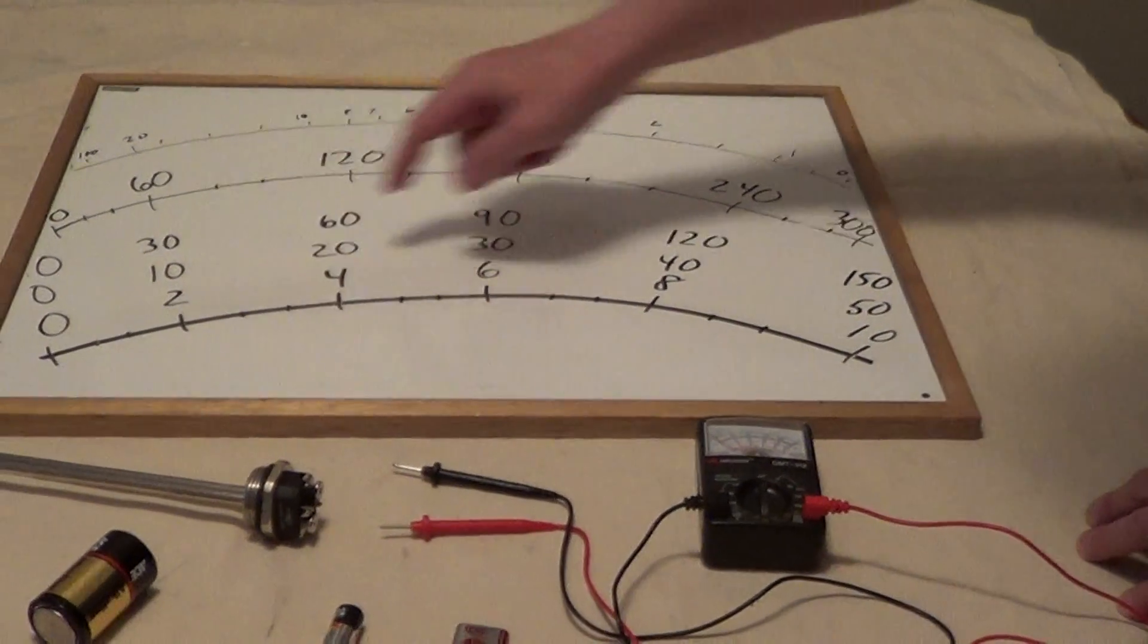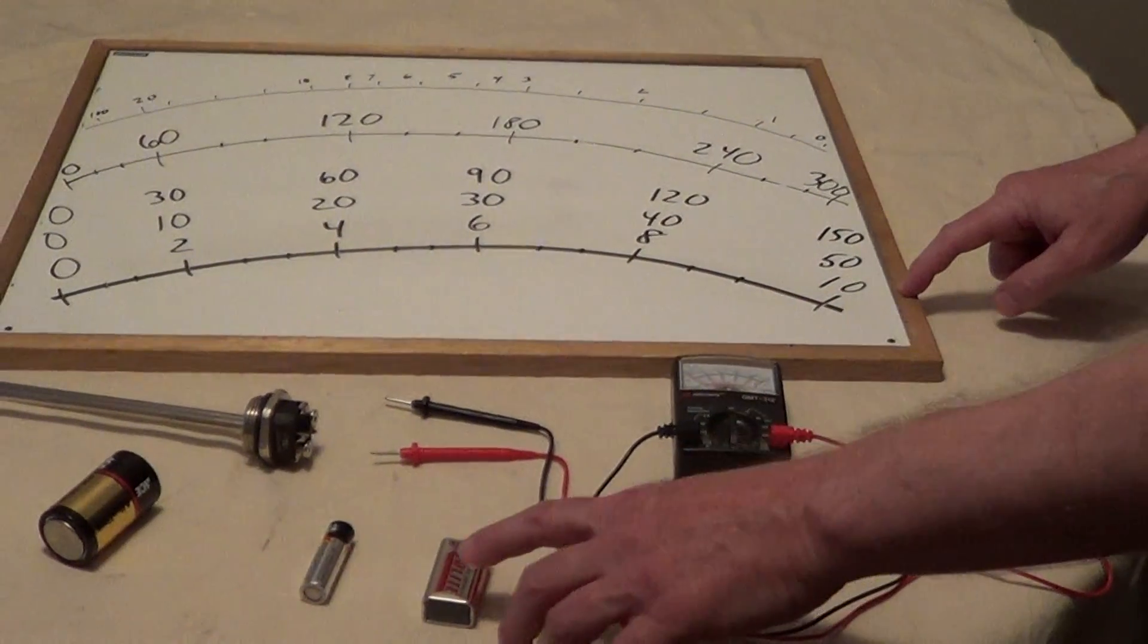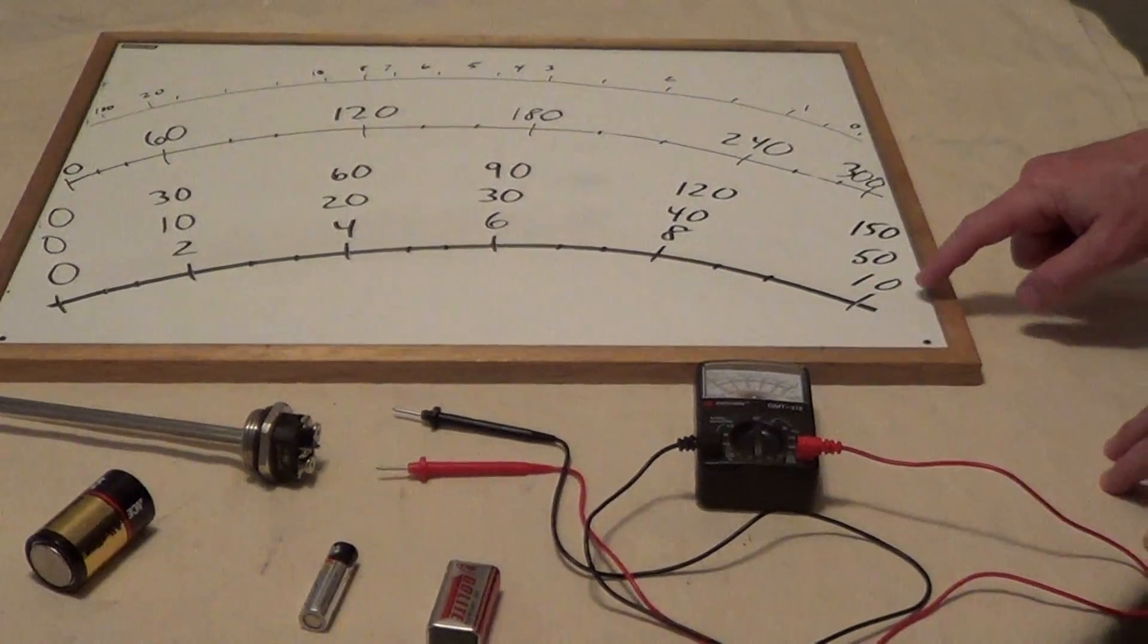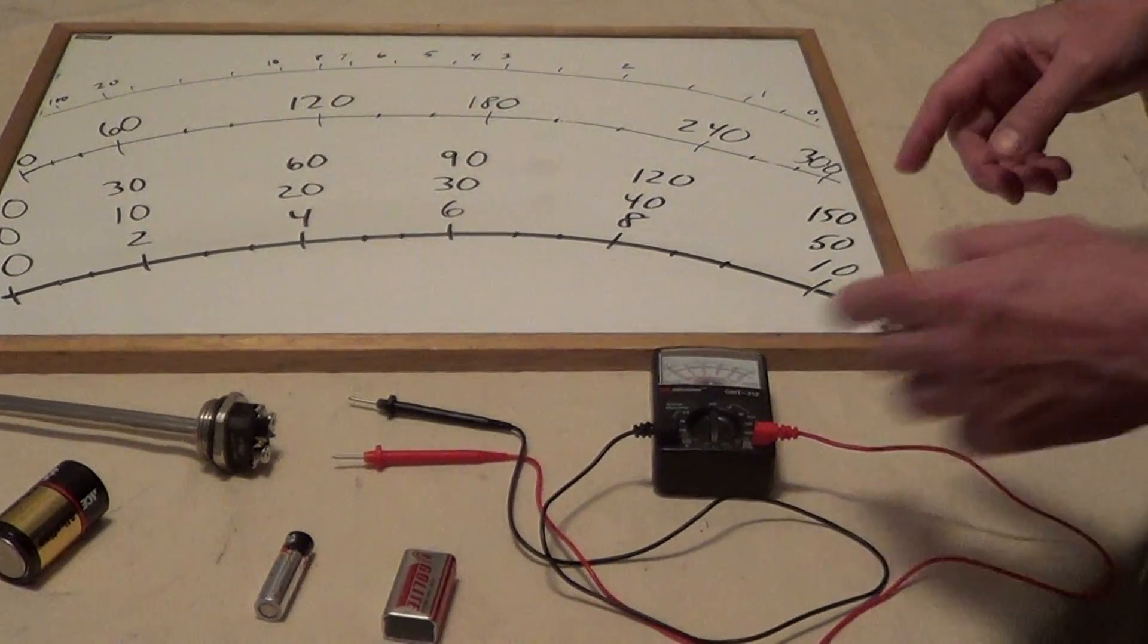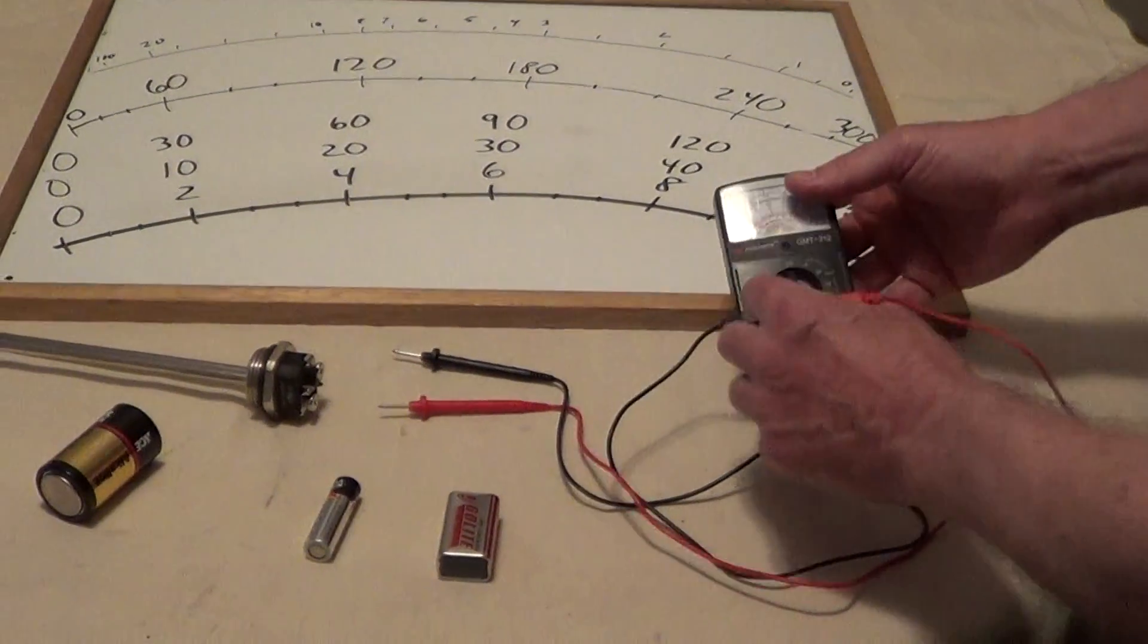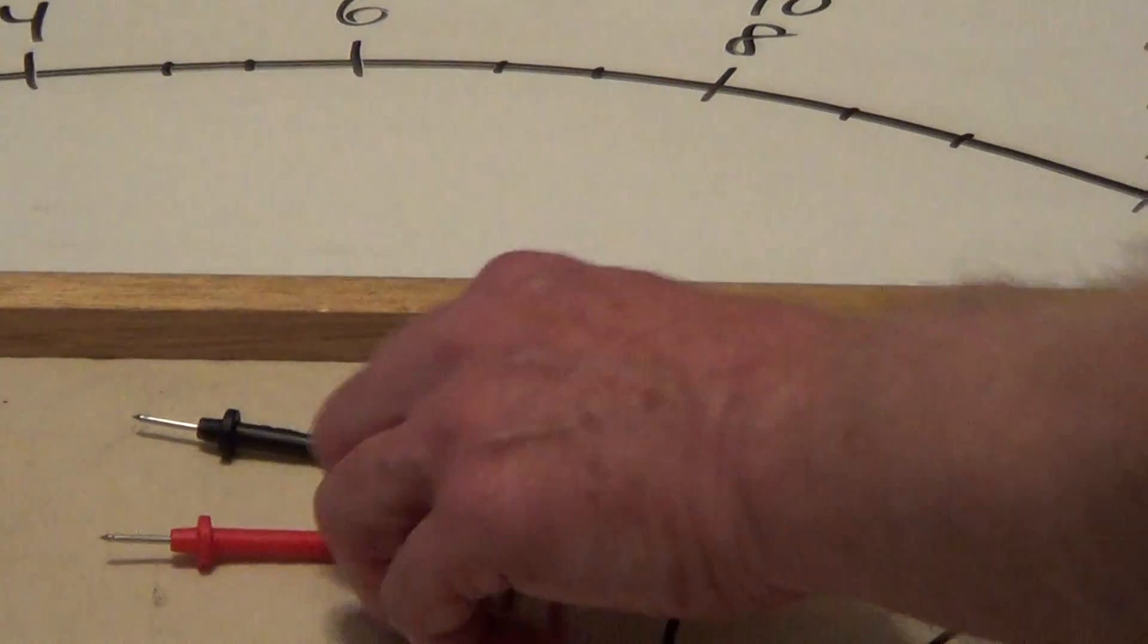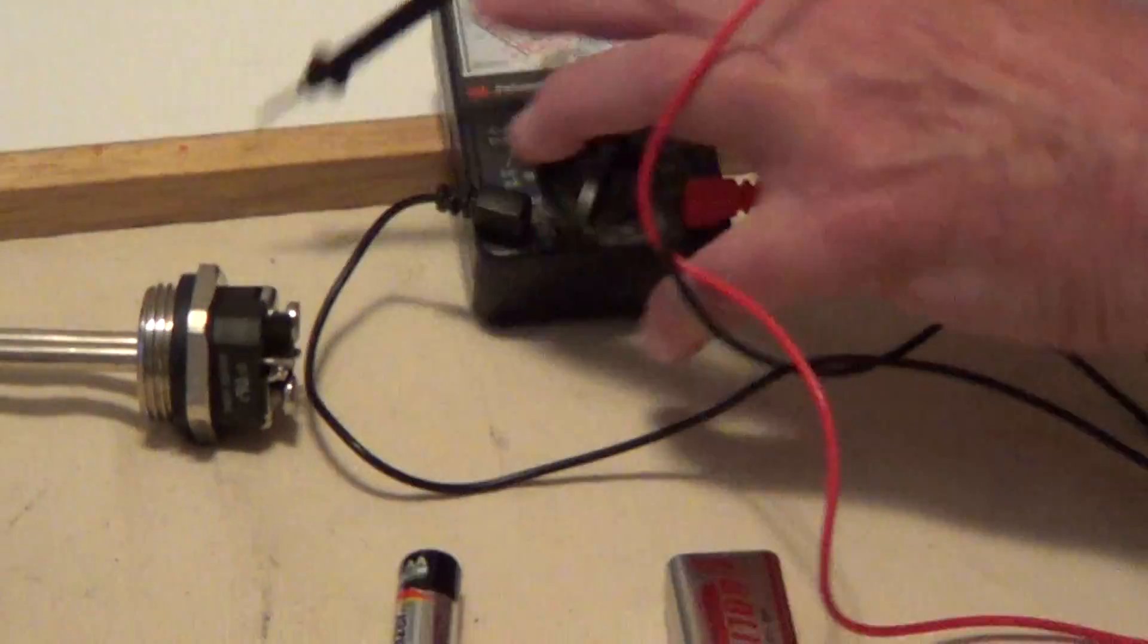If you're testing a regular battery like a 9 volt or a C, a double A which is 1.5 volts, you would change it to 10 DC. For example, we've got a couple batteries here. I'm going to change the meter to 10 direct current. For this first battery which is a 9 volt, I'll test it.